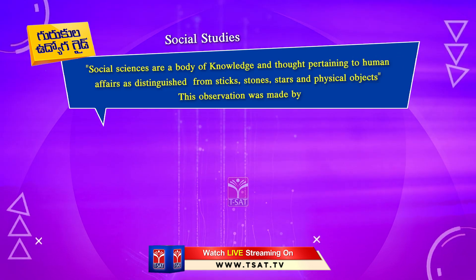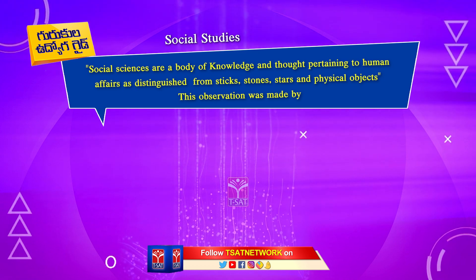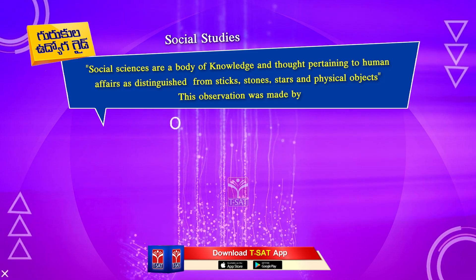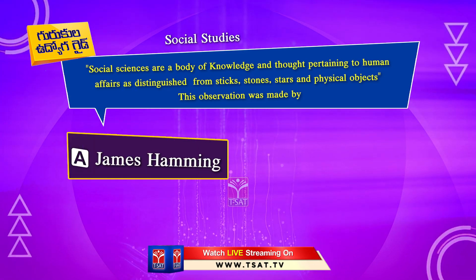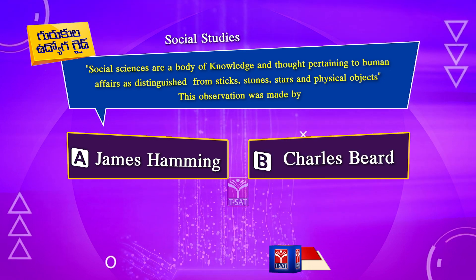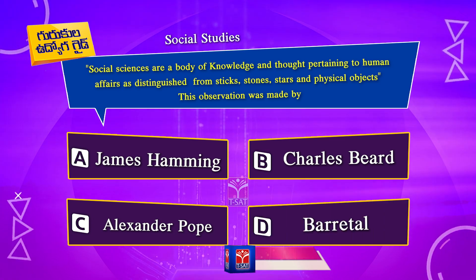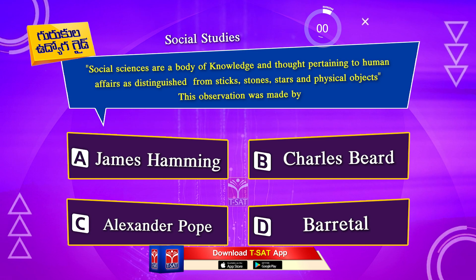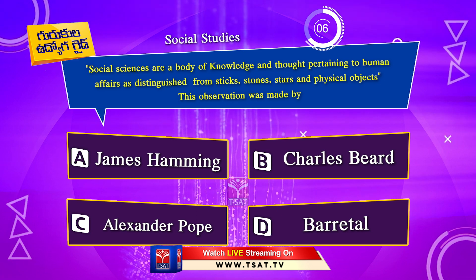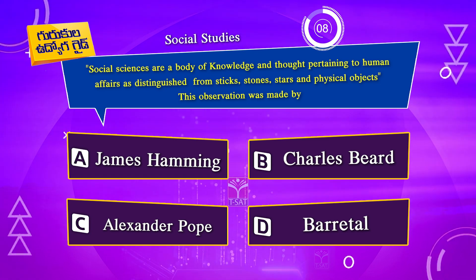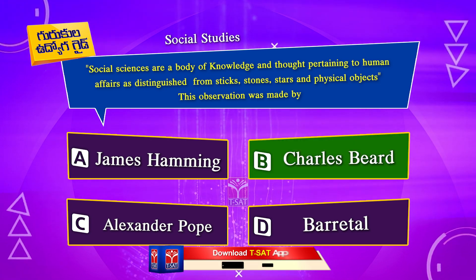Social sciences are a body of knowledge and thoughts pertaining to human affairs as distinguished from sticks, stones, stars and physical objects. This observation was made by: Option A. James Hamming. Option B. Charles Beard. Option C. Alexander Pope. Option D. Barretel. The correct answer is Option B. Charles Beard.